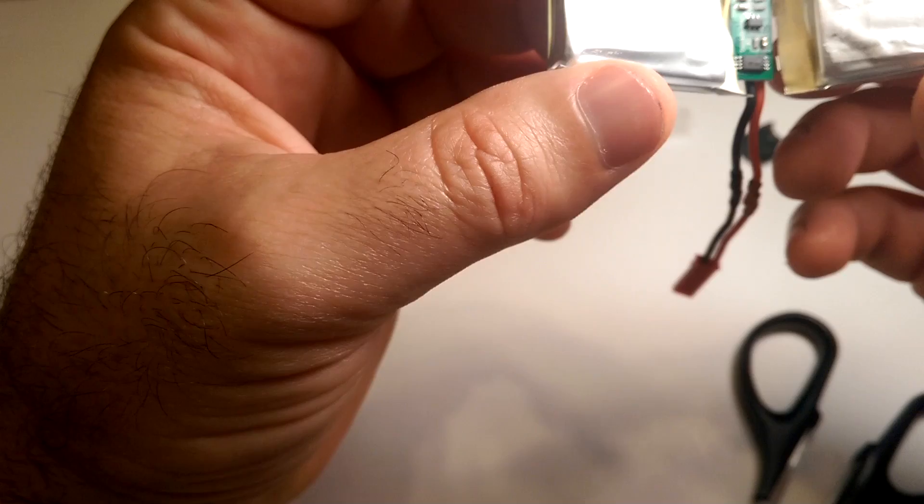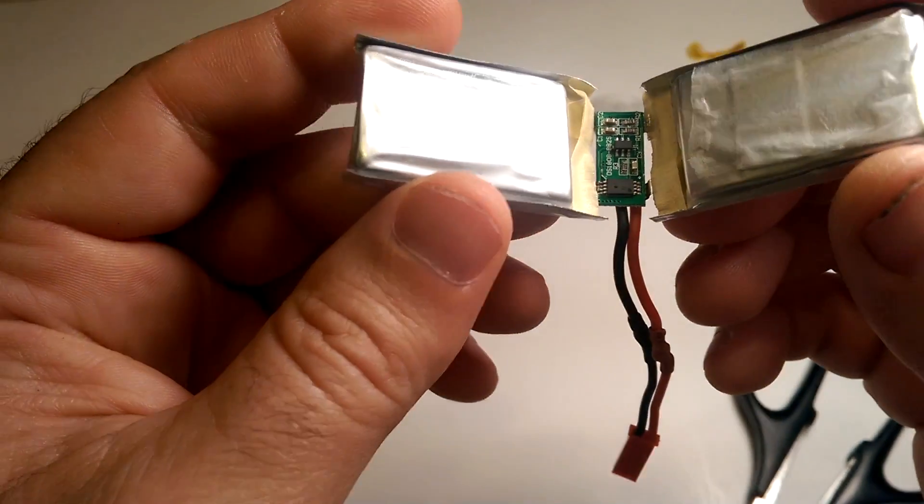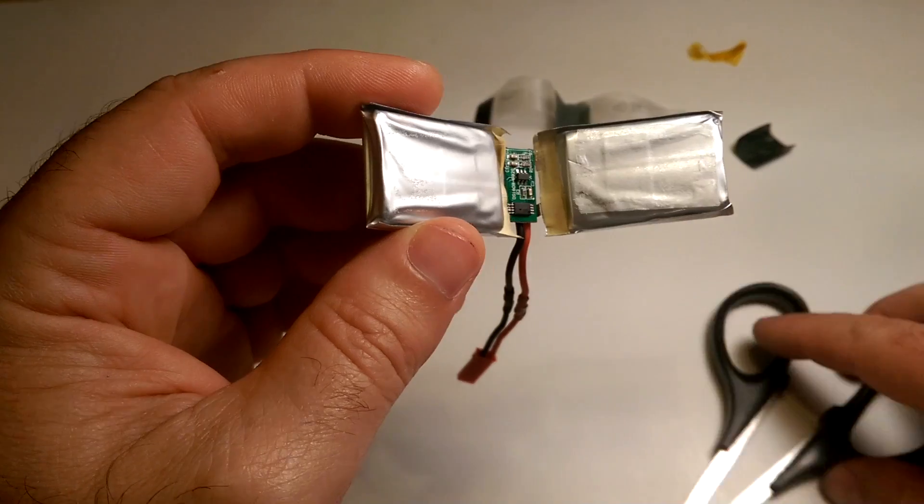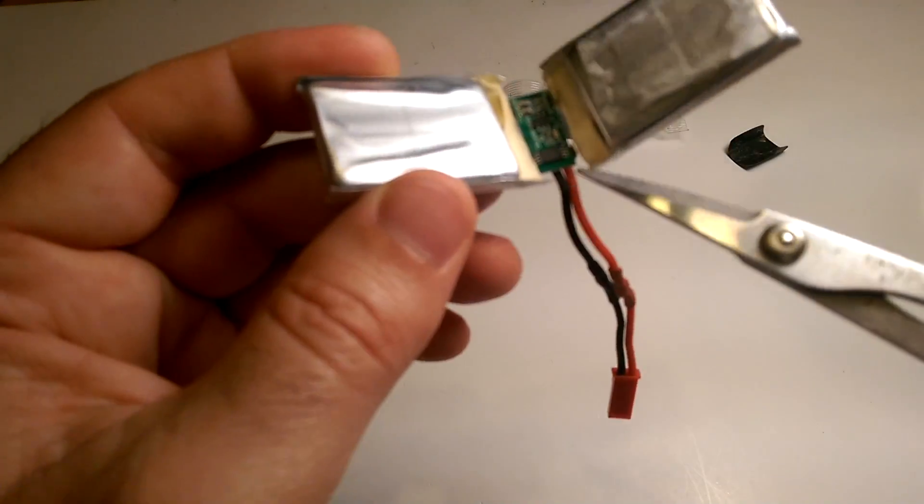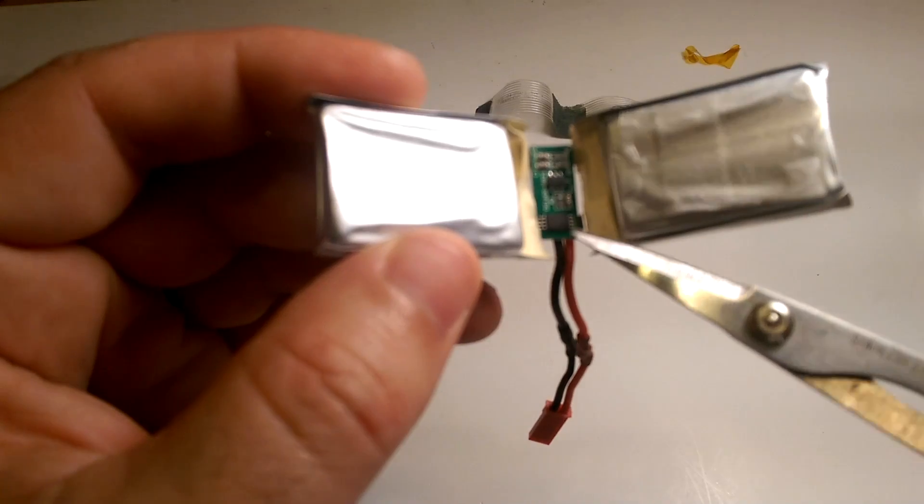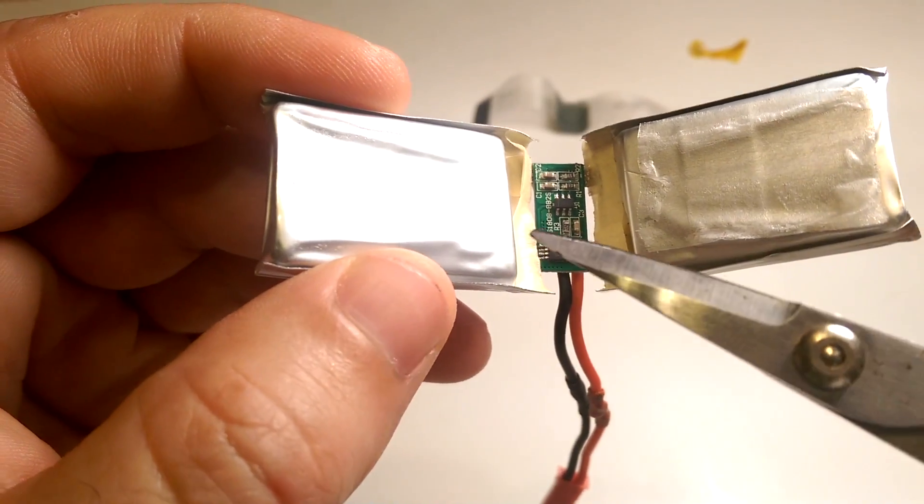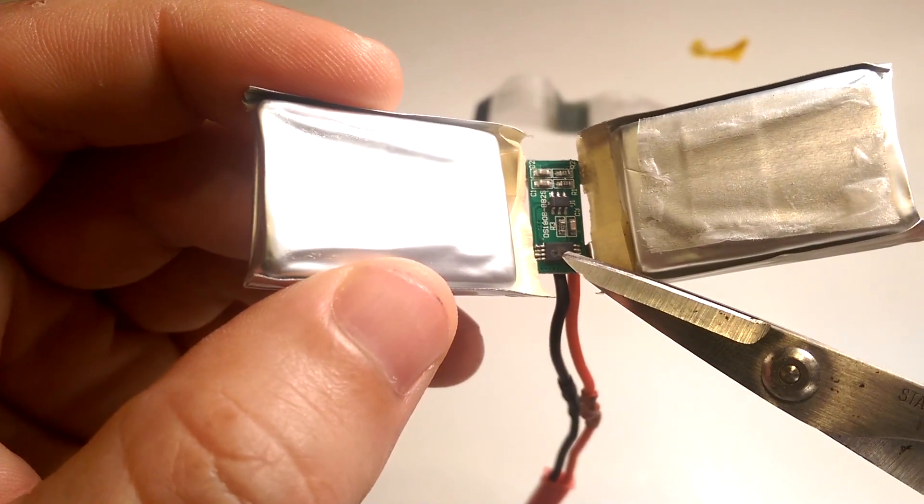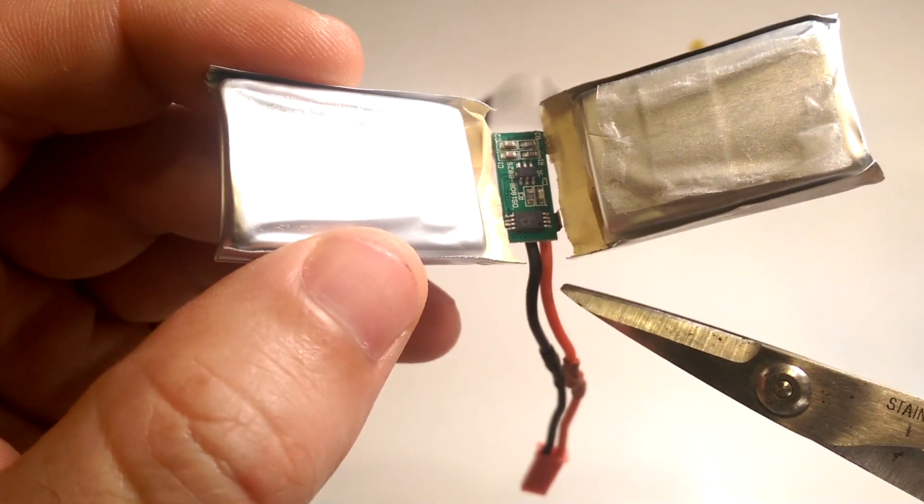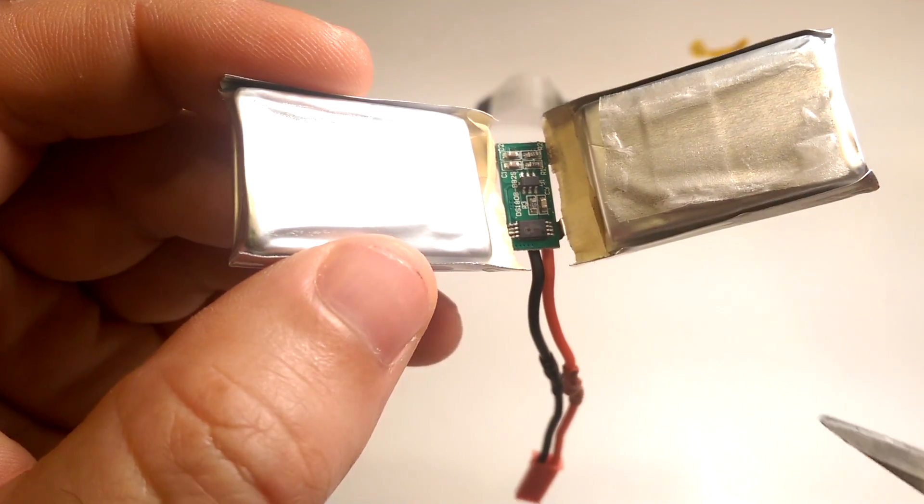And what you're going to see is this little circuit board. And in the circuit board, you're going to see specifically this little chip right here. Let's see if we can get that to focus. This little chip right here, and that's the one that burns out when you short your two wires together by accident. So that's the chip we want to bypass. And it's really easy.